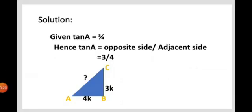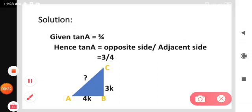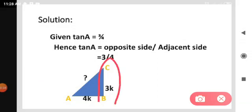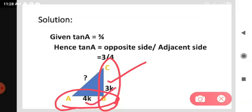They given that tan A equals 3 by 4. We know tan A equals opposite side by adjacent side. Here is an ABC diagram. So BC is opposite side and AB is adjacent side. So they are also given that values 3K and 4K.